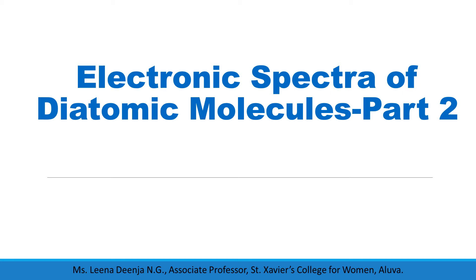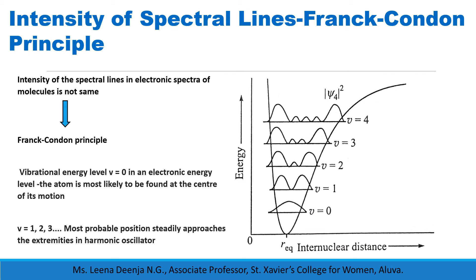Hi everyone. Through this class we are going to study about the Franck-Condon principle and the intensity variation of spectral lines. The intensity of spectral lines in electronic spectra of molecules is not uniform. The intensity variations can be explained using the Franck-Condon principle. The anharmonic model of a diatomic molecule has a potential energy curve represented by the Morse curve.